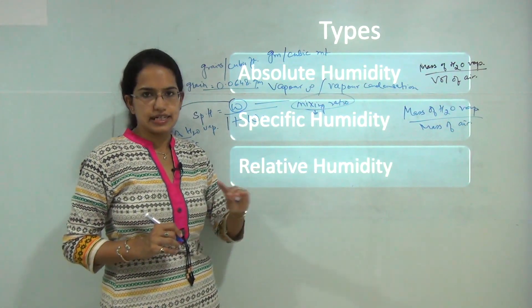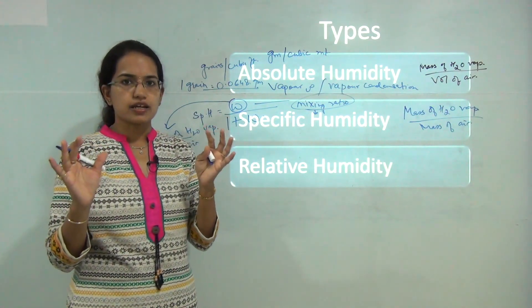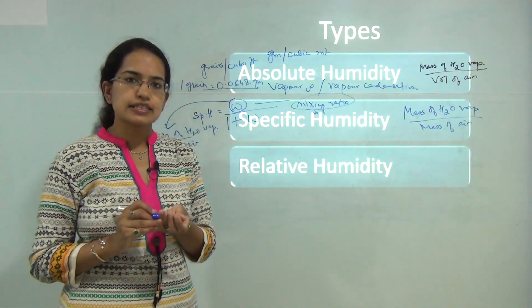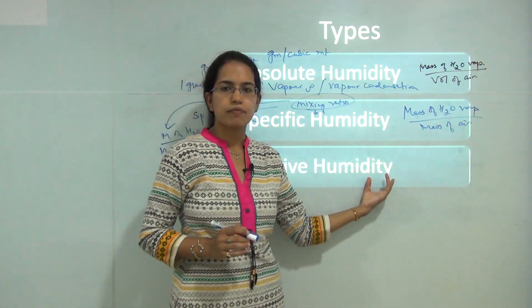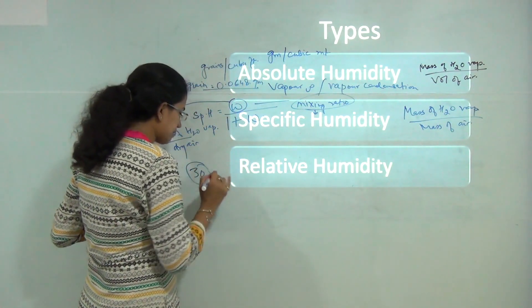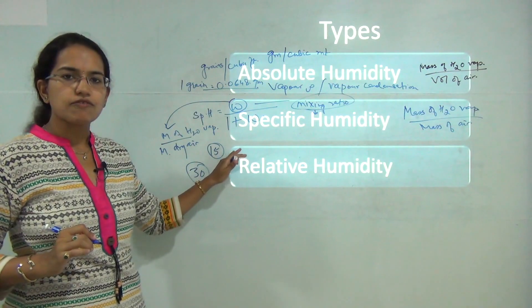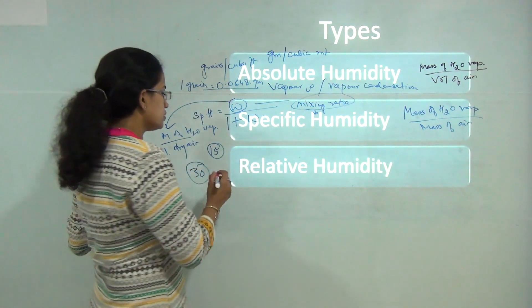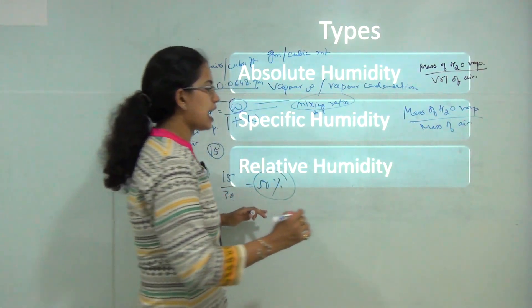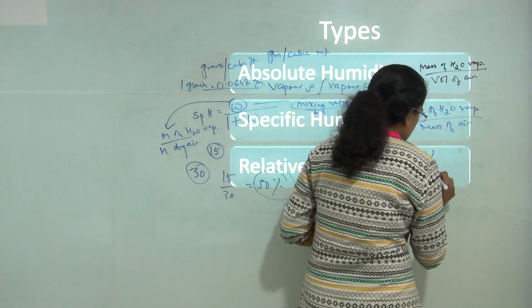Relative humidity is the maximum amount of moisture that a set of air can contain at a given temperature. For example, if there is 30 grams of moisture that air can hold and 15 grams is actually present, the relative humidity would be 15 divided by 30, that's 50 percent relative humidity. Dry air would be 0 percent relative humidity, and saturated air would be 100 percent relative humidity.